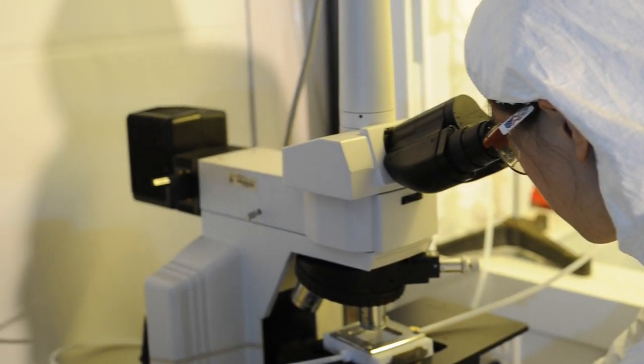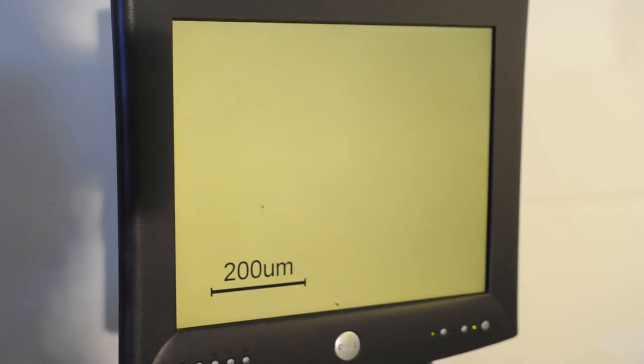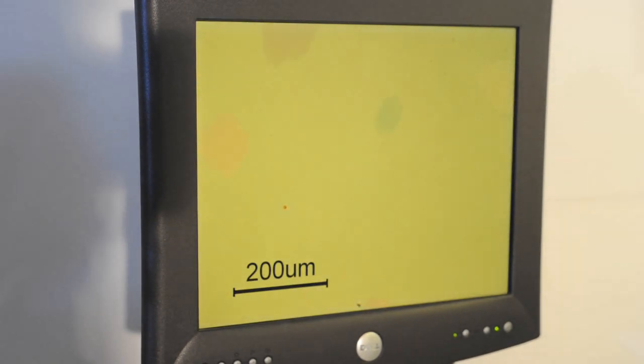Here we examine the films we make under the microscope to see how the crystals grew during spin coating. We try to control the size of the crystals in the film. The bigger the crystals, the better the devices will turn out.